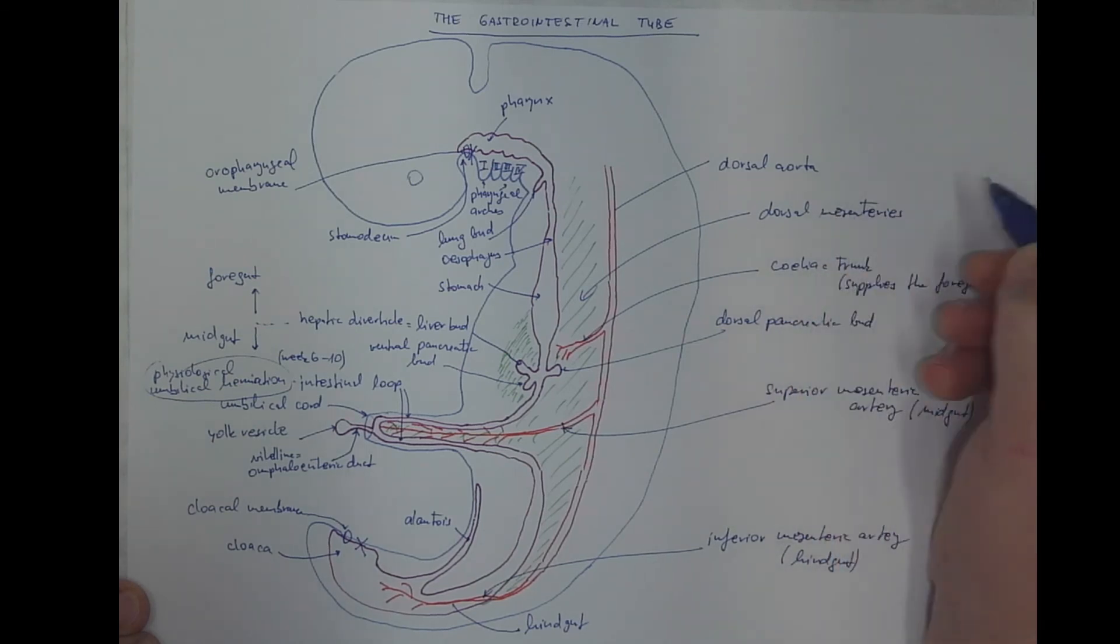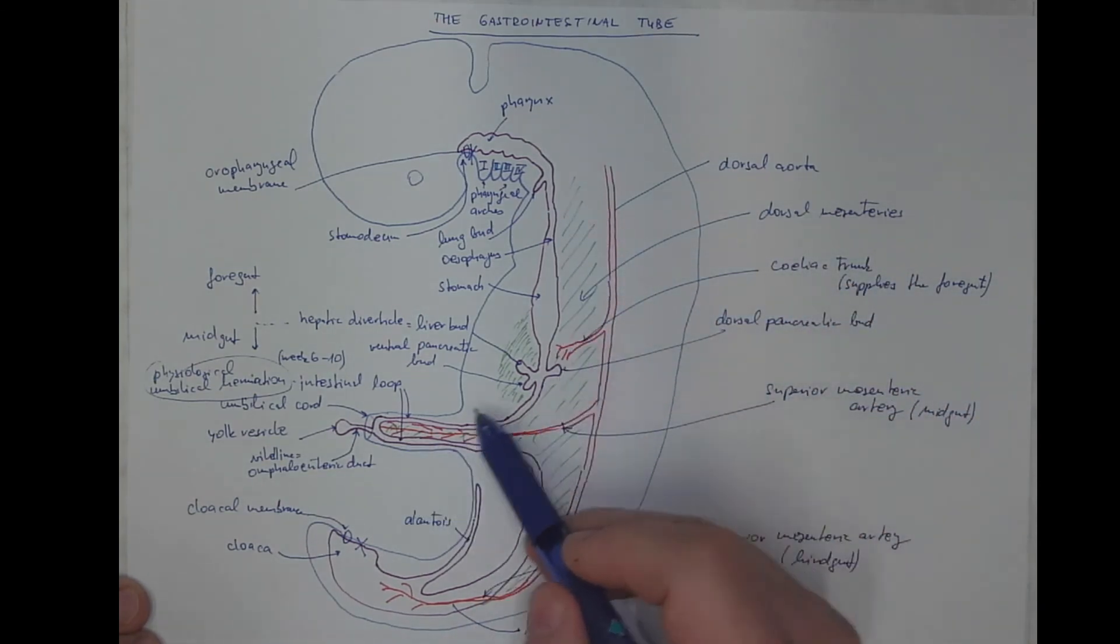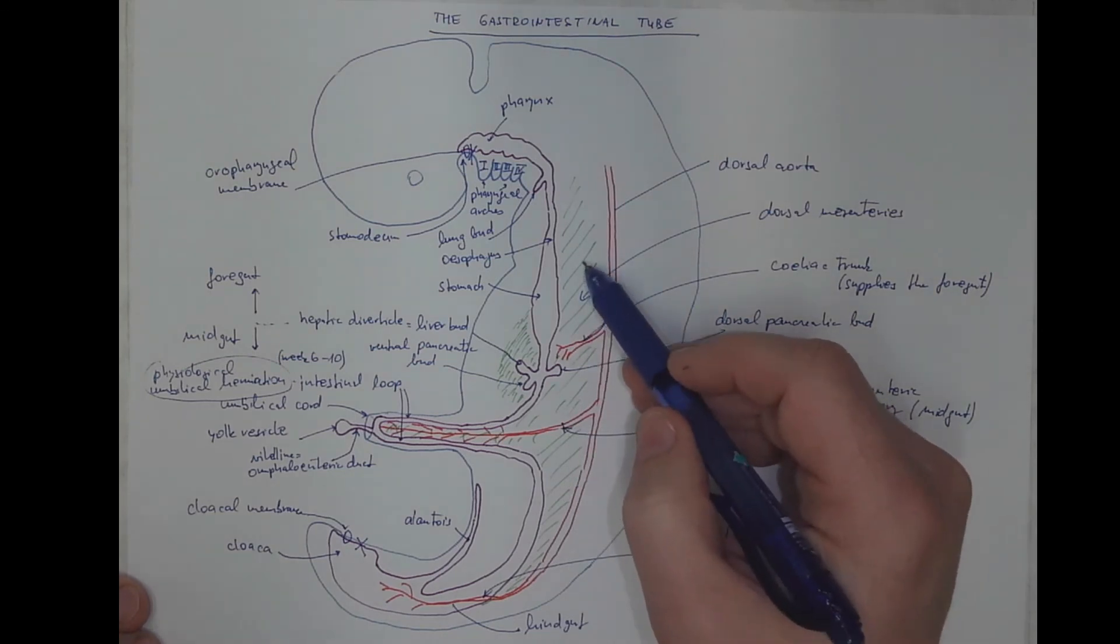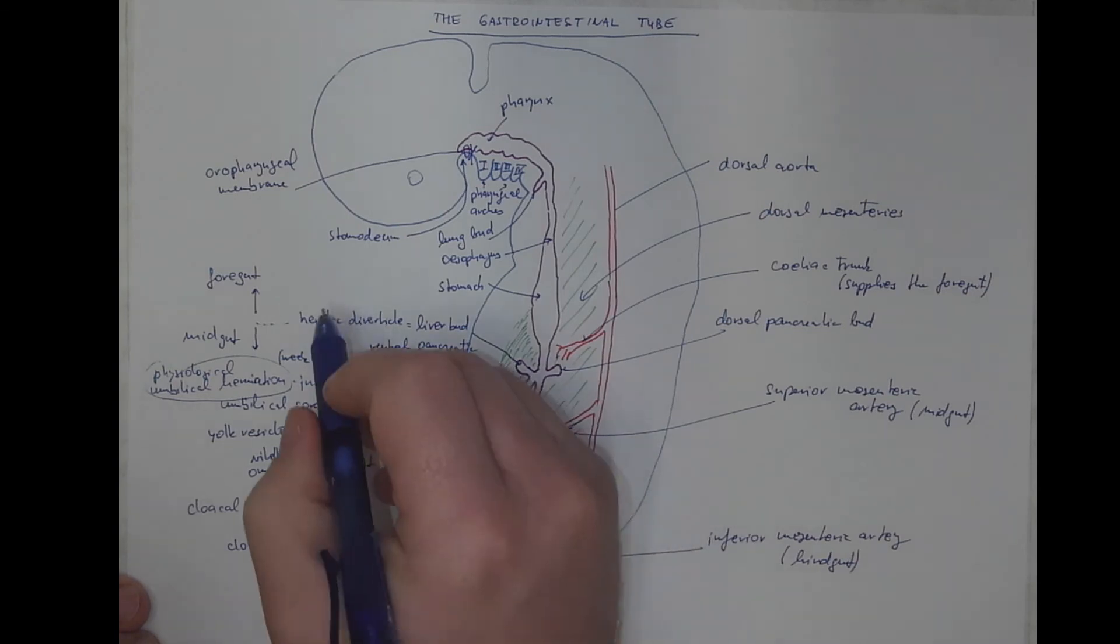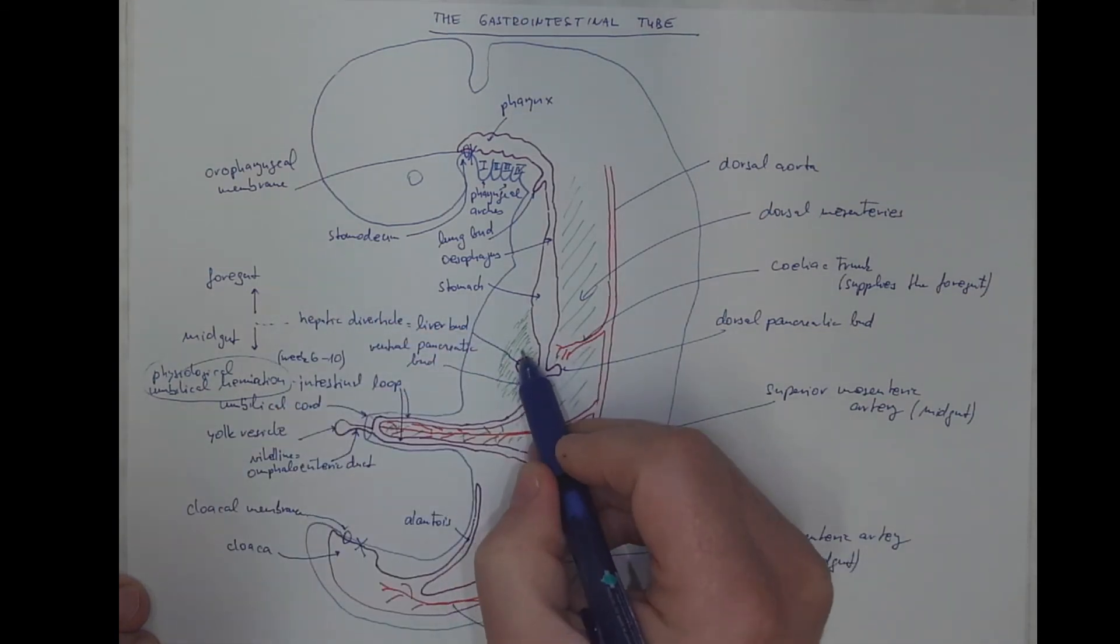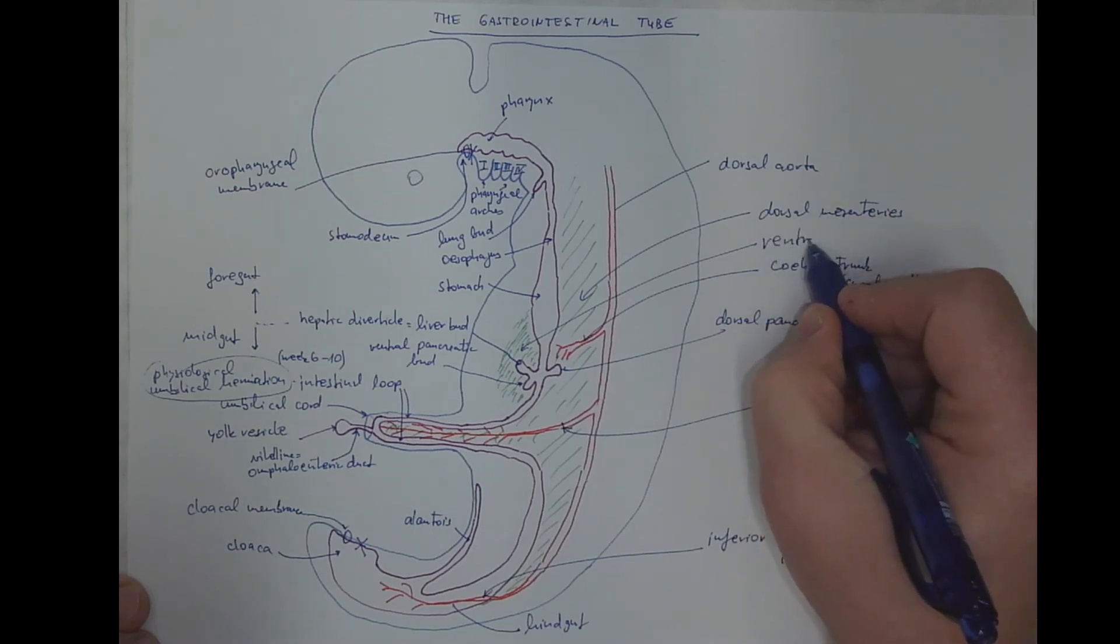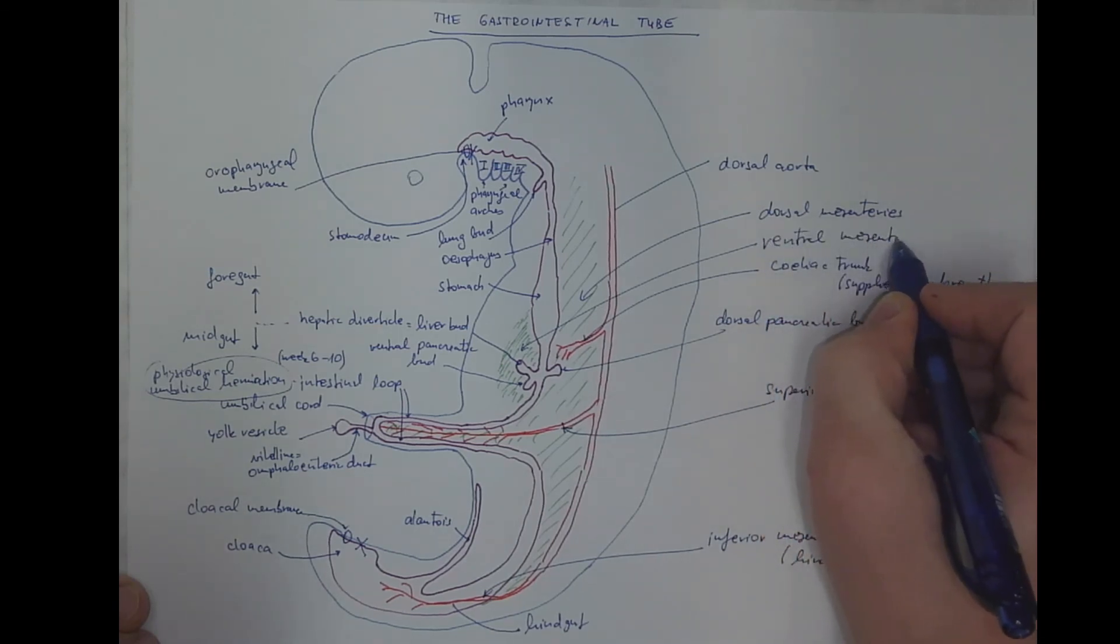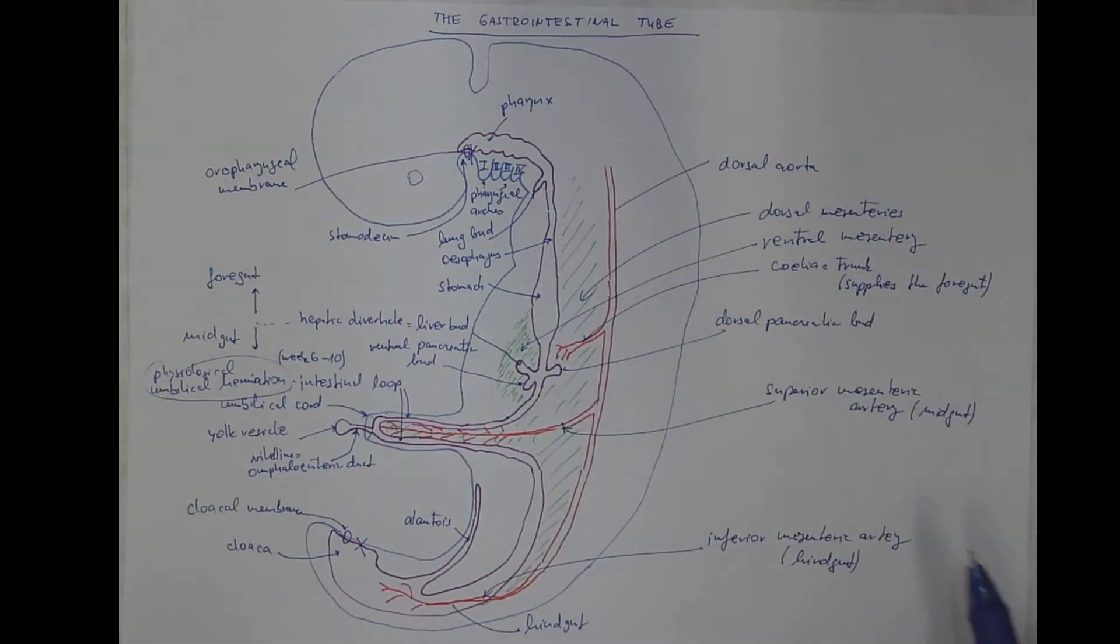Let me also label the dorsal mesentery. I should say, perhaps dorsal mesenteries, because they could be named according to the various parts of the GIT, like mesogastrium, mesentery in the proper sense of the word, mesocolon, etc. And there is a small ventral mesentery here, in a much smaller extent. In next schemes, we will go through the various parts of the divisions of the gastrointestinal tube.